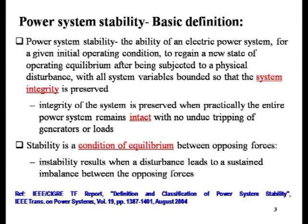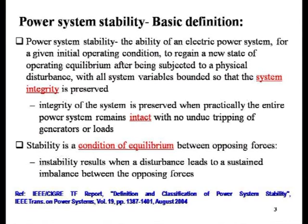Referring to power system stability, the basic definition from the IEEE CIGRE report says it refers to the ability of the electrical power system — if you consider interconnected systems, you will have a generator, then associated controllers for active power control through the governors, and the generator coupled to the turbine — steam or hydro. For reactive power control, to control the terminal voltage of the generator, you have the exciters and AVR — automatic voltage regulator. You have the generators at the bus bar connected to the transmission network, interconnected and feeding power to the load center.